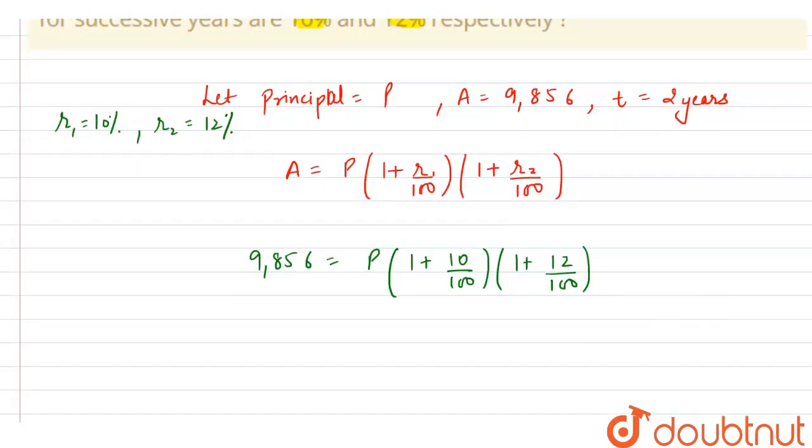So if we solve this then we can say that this 0 gets cancelled with this 0. So we are having 9,856 equals to P into, this will become 11, 10 plus 1 that is 11, so 11 by 10 into, here this gets cancelled with this.